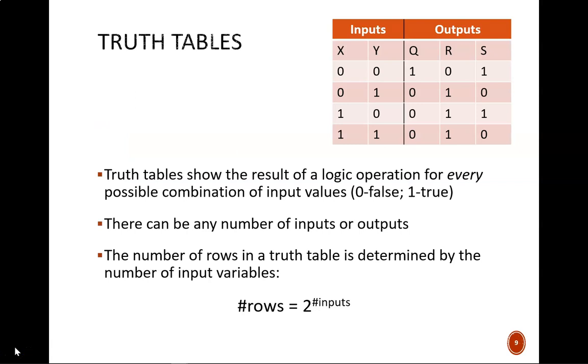Truth tables show the result of the logic operation for every possible combination of input values. I emphasize that word 'every' because it is important. If someone makes a statement like 'this light turns on when one of these two switches are on,' it provides some information but not all the information. What happens when both switches are on? What happens when both switches are off? A truth table needs to demonstrate all of the possibilities.